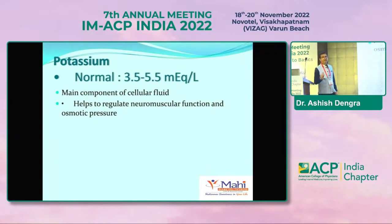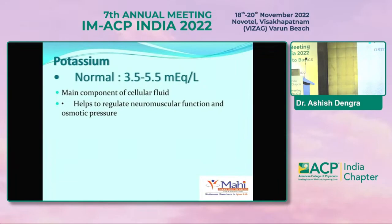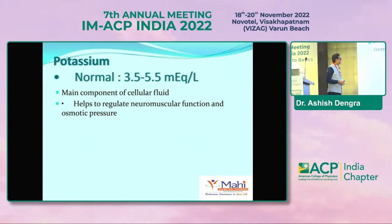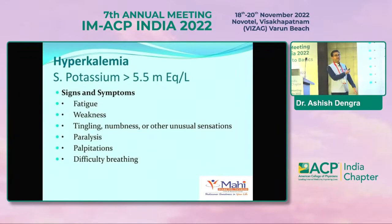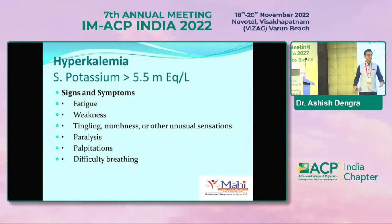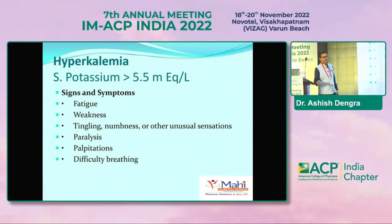Coming to potassium - another very important electrolyte. One of my patients came to clinic with loose motions and vomiting for 3 days, not eating anything, and now unable to walk. On examination she had flaccid bilateral lower limb paralysis. After admission, gradually both upper limbs also became paralyzed. When we checked potassium, it was 1.9. This is the havoc you can face with hypokalemic states.